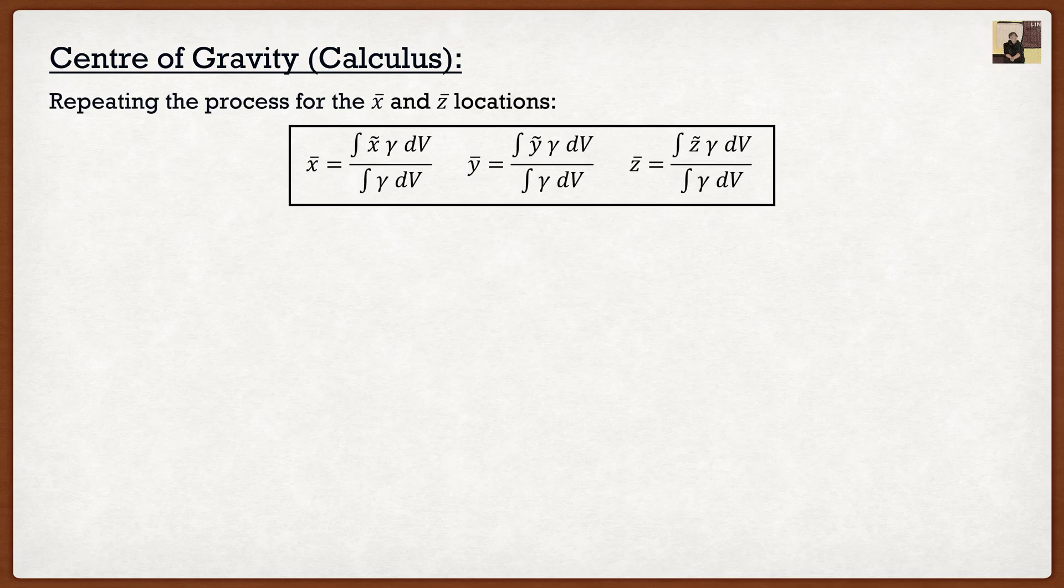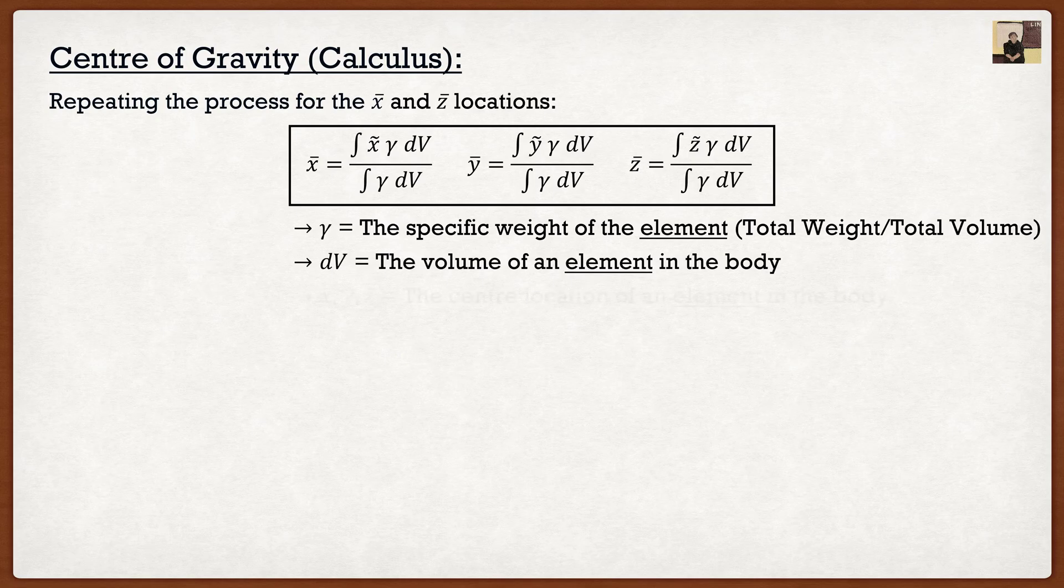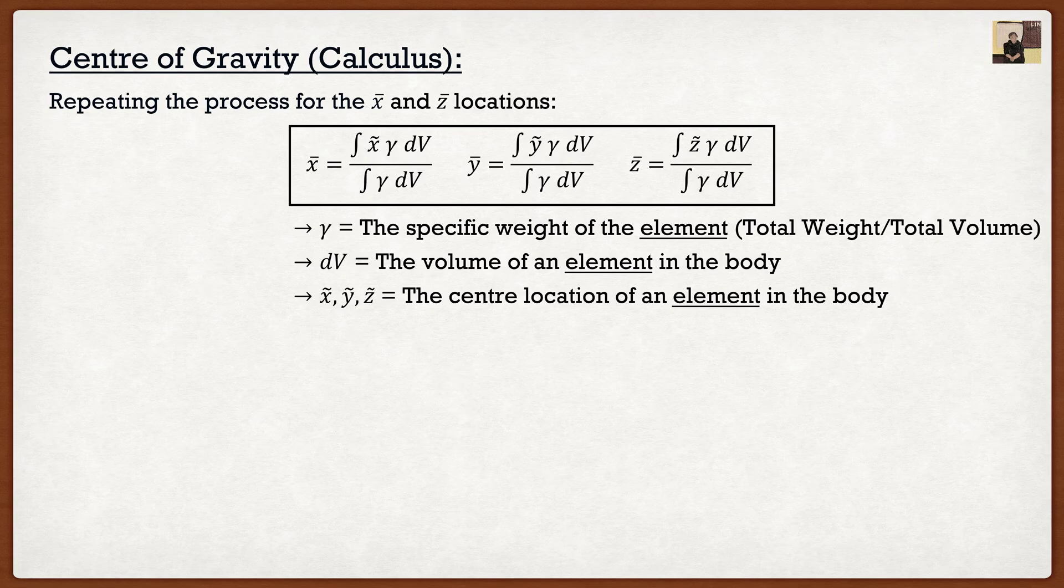So if we were to repeat this process for x bar and y bar, we kind of have the same thing that we had before where all the formulas are the same. The only difference is if I'm doing x bar, it's x squiggle. I'm doing y bar, it's y squiggle, et cetera. So again, gamma here is the specific weight of an element, which is the total weight over the total volume. DV is the volume of an element in our body. And x squiggle, y squiggle, and z squiggle is the center location of an element in our body. The key here, which I underlined three times, is an element. An element. We're not considering the body as a whole. We're looking at a little slice or a little element.